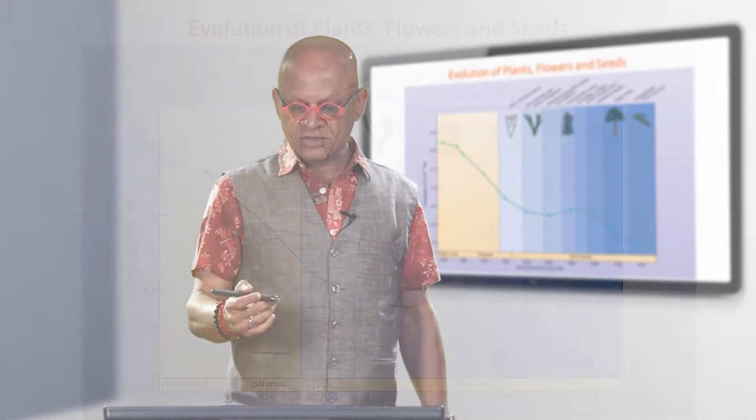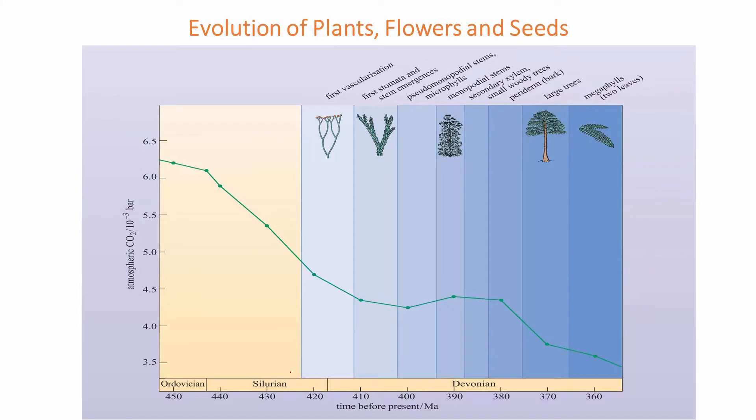All these things act together. So you can see here that the first vascularization, which means the evolution of vascular structures in the plants to move the water from the ground deep inside the soil onto the leaves which need to do photosynthesis, began around 420 million years ago.